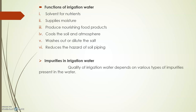You must have observed that when soil dries it makes piping, so water is most important in preventing that. Those were the functions of irrigation water. Now we will discuss about quality — and to discuss quality, we have to consider what impurities are present. The quality of irrigation water depends mainly on various types of impurities present in the water.